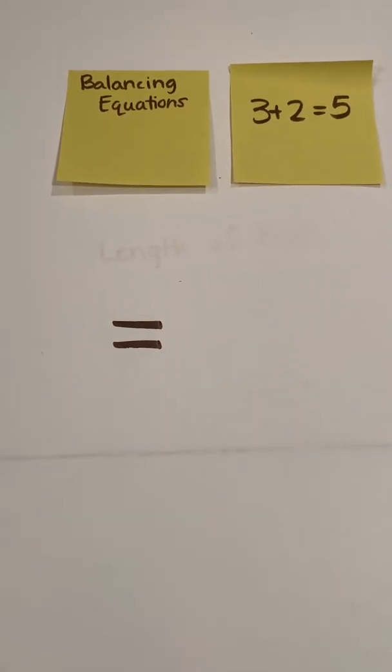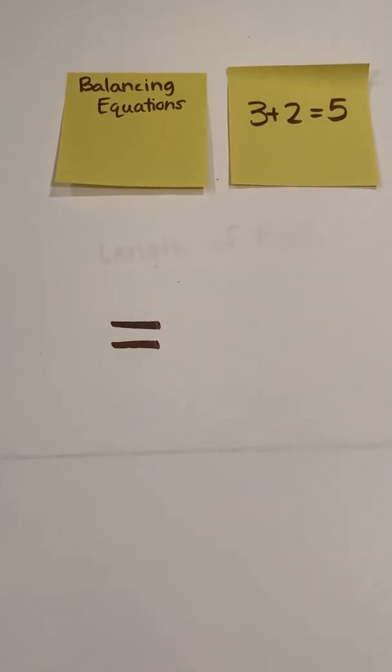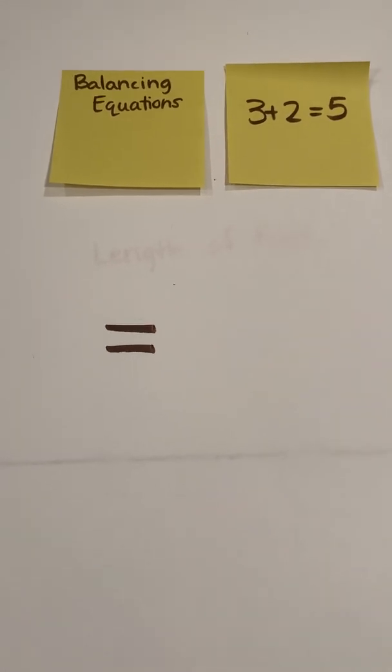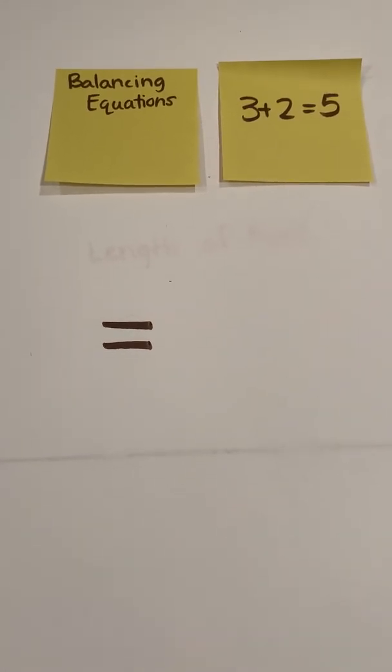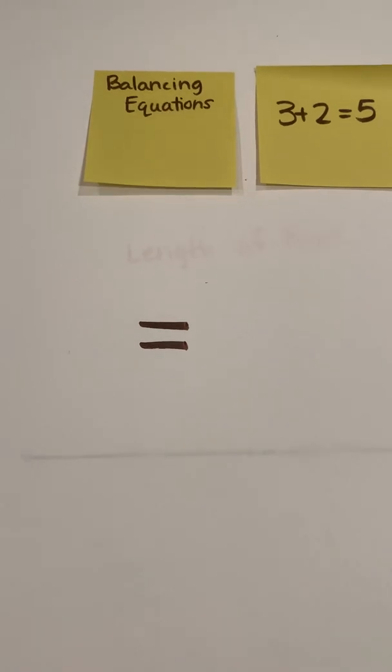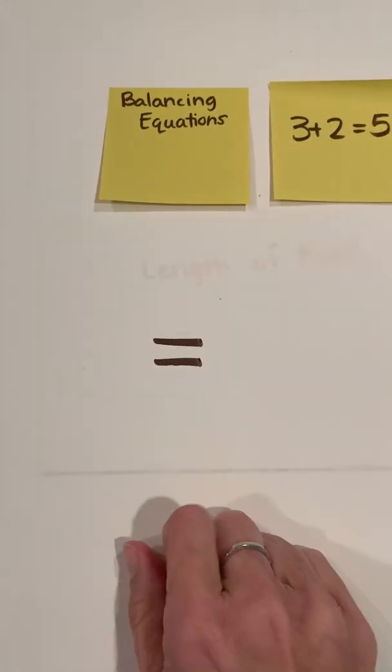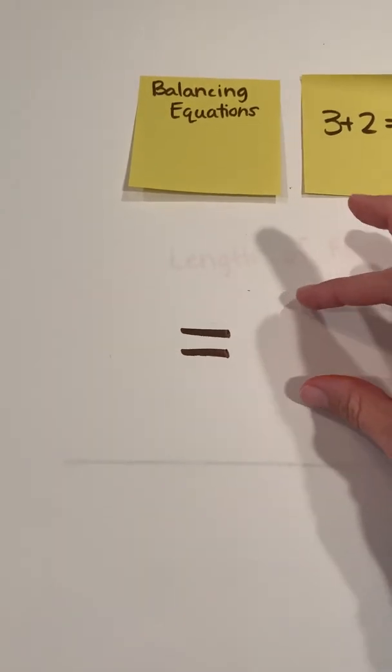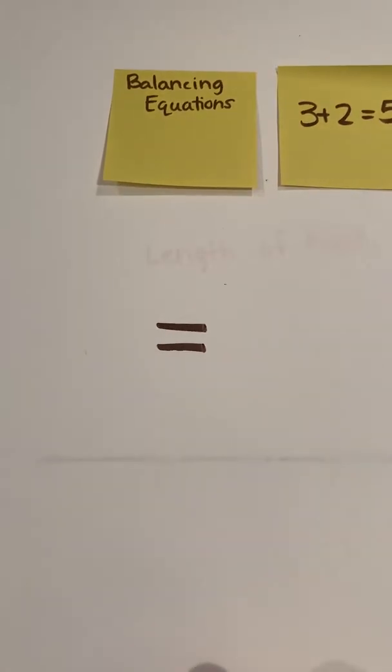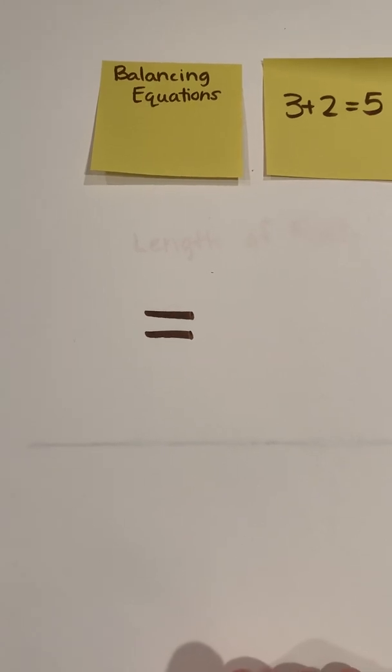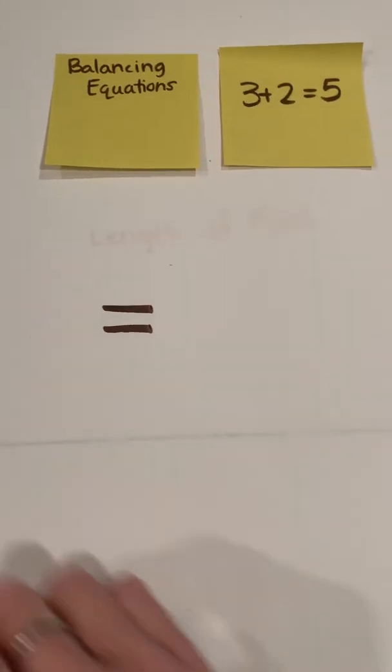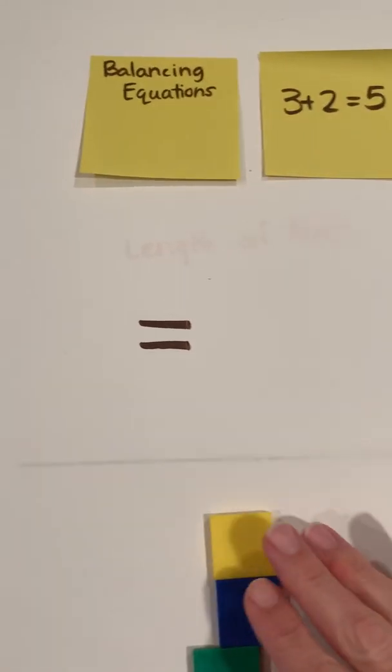To help students understand equals and the same as, we're going to use the color tiles. I can say 3 plus 2 equals 5. You can start with a plain piece of paper and just put an equal sign in the middle. If you have some paper that has some grids, that might be helpful for some students, but it's not necessary. One of the things we want to do is make sure when we're using these that we start at the same point.